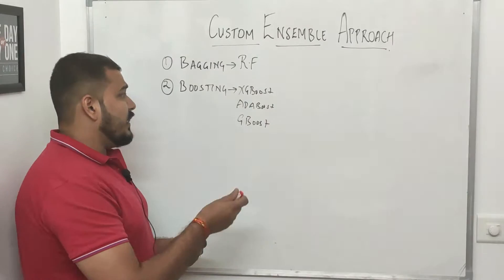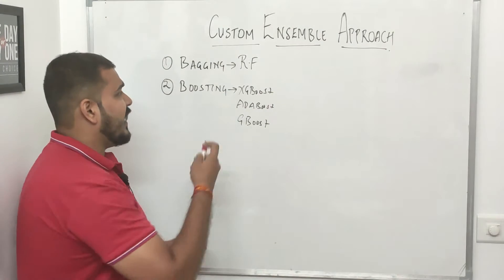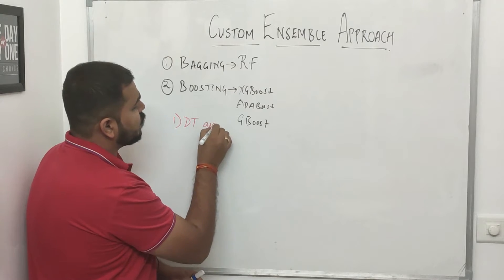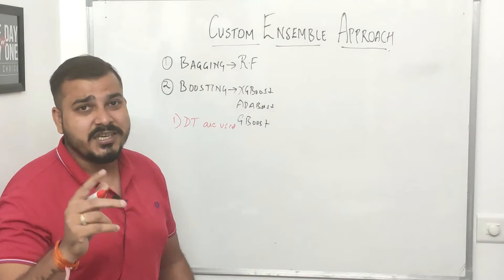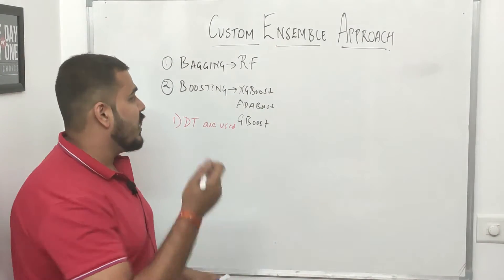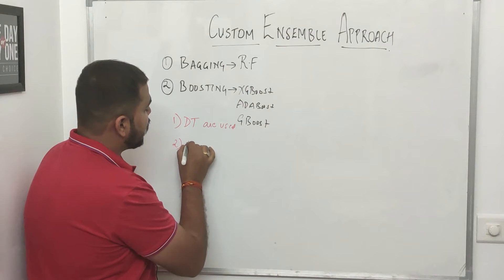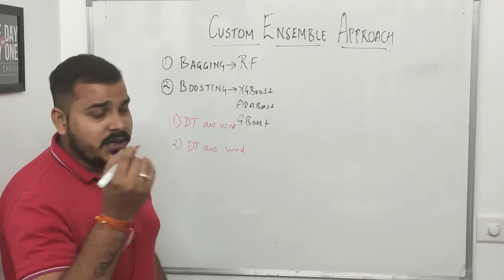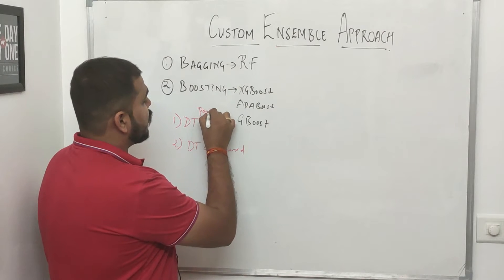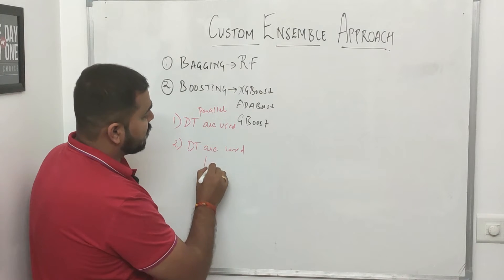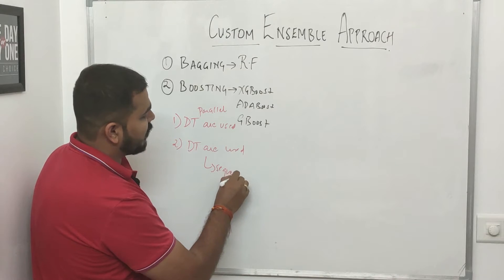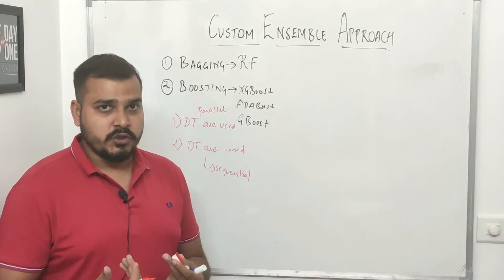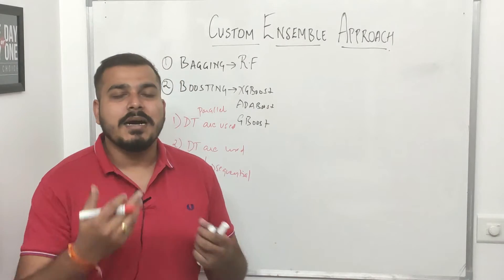In both bagging and boosting algorithms, decision trees are used — not one, but multiple decision trees. In bagging, for example random forests, parallel execution of decision trees happens. In boosting, sequential decision tree execution happens. We call this the ensemble approach.